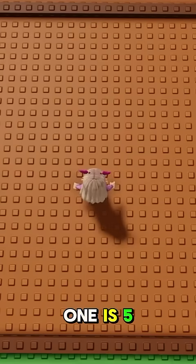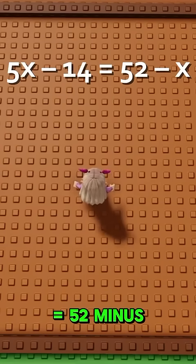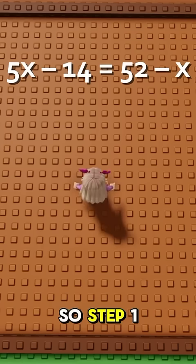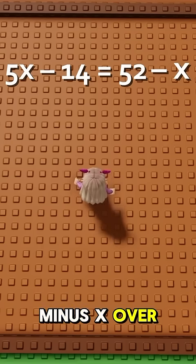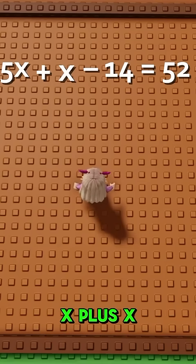So the first one is 5x minus 14 equals 52 minus x. Step 1, we move the minus x over to the left which makes it a plus. So now it's 5x plus x.